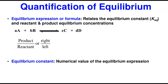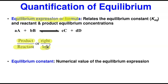We can quantify equilibrium using two things. Number one, the equilibrium expression — writing the formula of equilibrium based on the law of mass action — which relates the equilibrium constant to the reactant and product concentrations. The product must be the numerator and the reactant must be the denominator. The right side is always the product and the left is the reactant. It is represented by Keq.